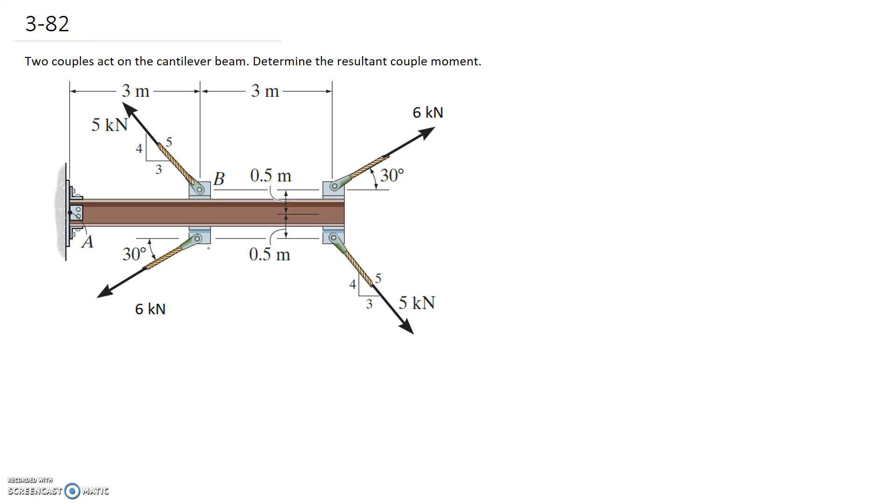So let's start with this couple produced by the five kilonewton forces, so we're going to end up with two couples, let's go with the red ones and the blue ones. So let's call it MC1, and we know that it's going to be equal to the force of the couple multiplied by the separation distance.